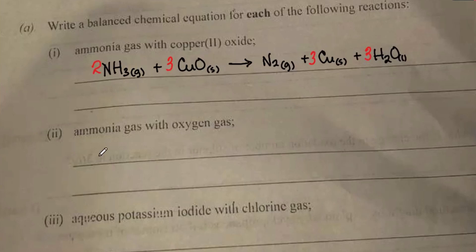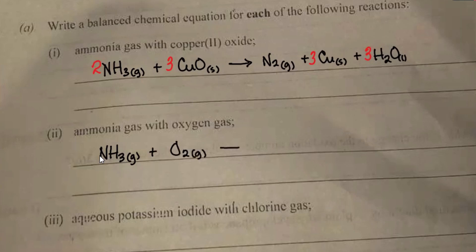We move on to the next question. The next equation says: ammonia gas with oxygen gas. Ammonia plus oxygen gas to give us NO gas plus H2O. This is used in the catalytic oxidation of ammonia to produce nitric acid (HNO3) — that's the Ostwald process.